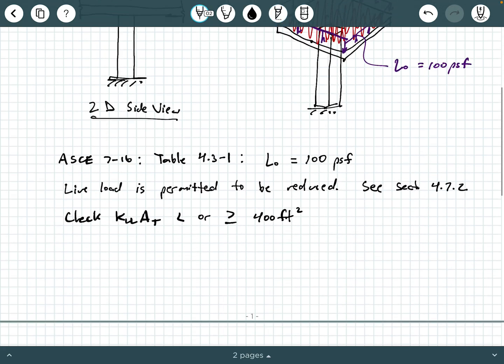So what we need is K_LL. So if we look at table 4.7-1 in ASCE 7-16, we can see that the K_LL, the live load element factor, live load element factor for interior columns is 4. So take a look at that table and find what category you fall into. We see interior columns is 4.